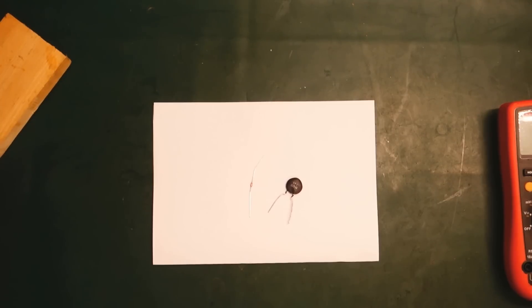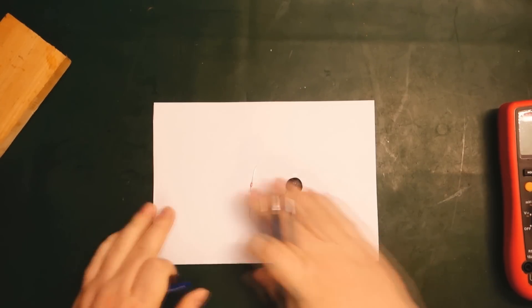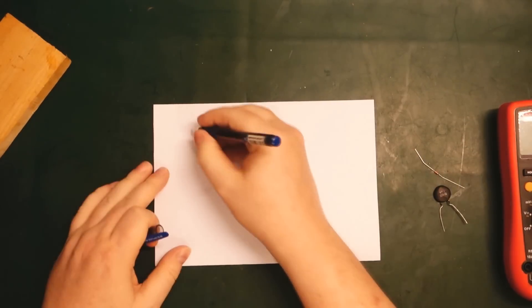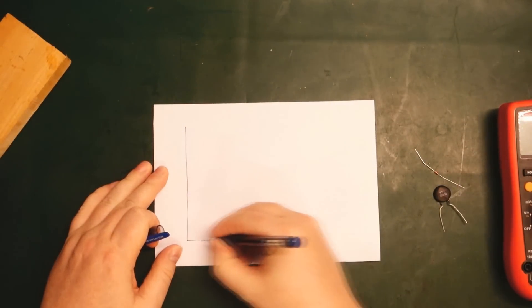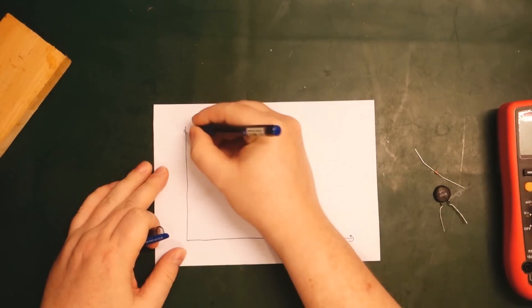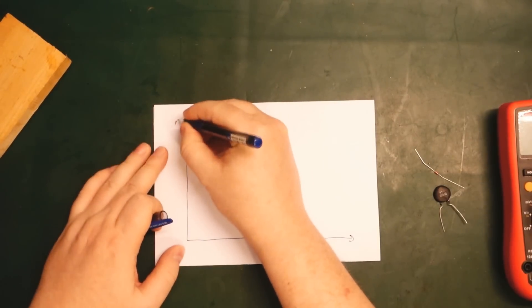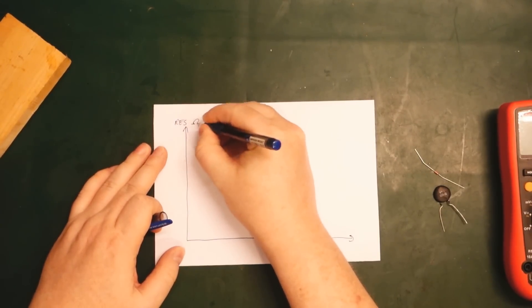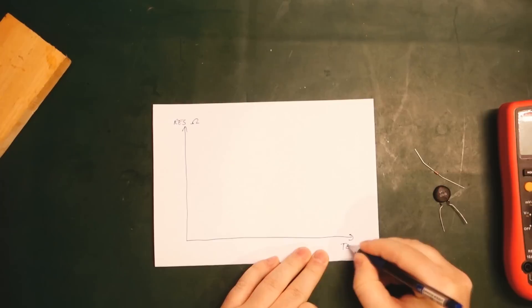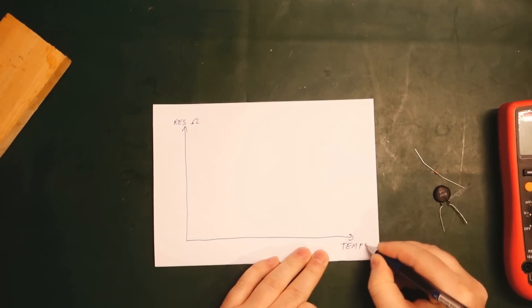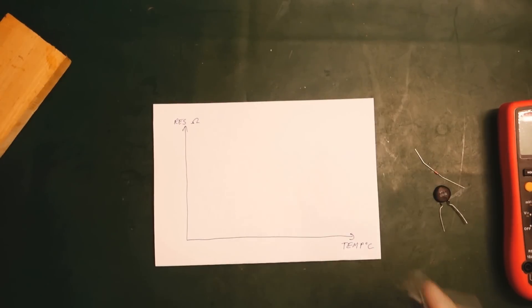PTC has a positive temperature coefficient. If we're going to draw this, it will look something like this. Just a quick little chart here. We have resistance here and we have temperature here.